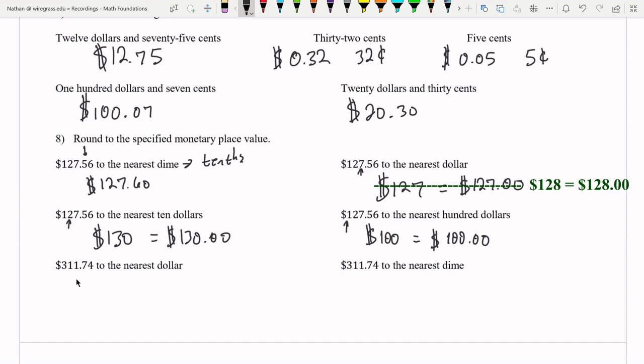Okay. Rounding this one to the nearest dollar. Once again, here, testing digit is seven. That is going to be rounded up. So I'm going to go three, one, two, or you can do $312.00.